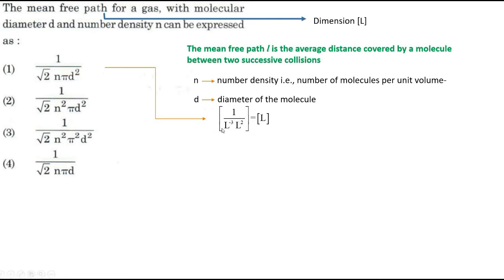So L square. Simplify the denominator. You will get L power minus 1. That will go to numerator. You will get L, which is same as the dimension of mean free path. Therefore, this answer is the correct answer.